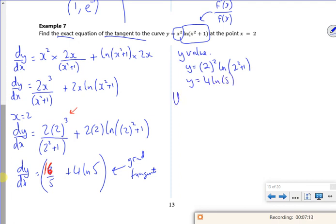So I'm going to use (2, 4 ln 5), which I could write as (2, log 5 to the power 4). And m is 16 over 5 plus 4 log 5.